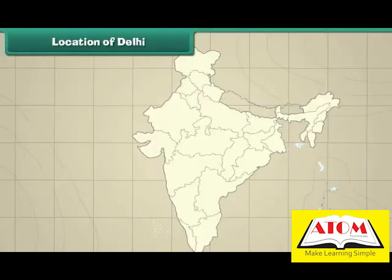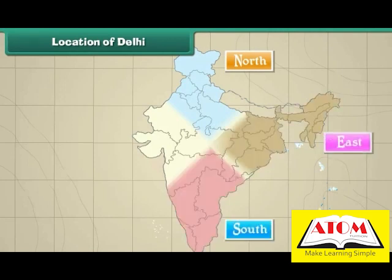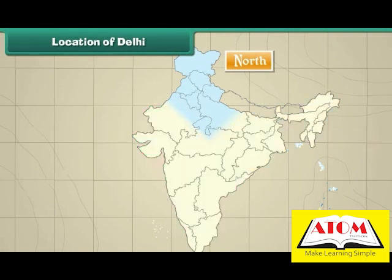This is the map of India. The four major directions — north, east, south, and west — are marked on the map. Delhi is the capital of India. It is located in the north of India.